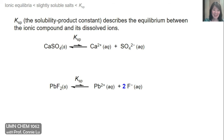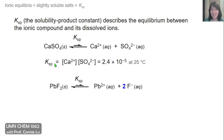We can practice writing Ksp expressions. In this first example is calcium sulfate, or gypsum. Calcium, being a group 2 metal, has a positive 2 charge in its ionic form. And sulfate then would be balancing that with a 2 minus charge. For this reaction, Ksp is simply a product of the calcium concentration times the sulfate concentration, and it has a measured value of 2.4 times 10 to the minus 5 at room temperature.